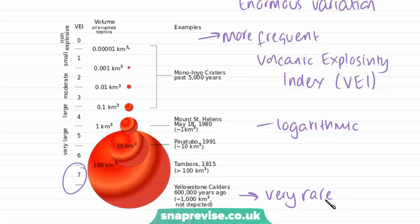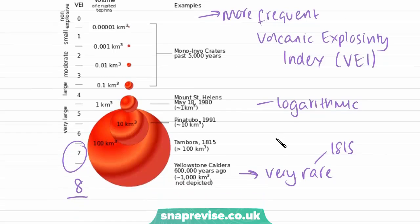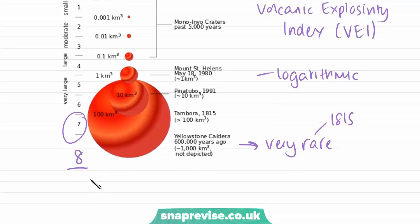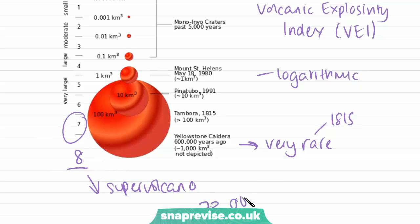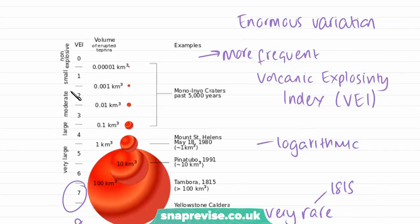It is thought the last time a 7 was recorded was in 1815 in Indonesia. There is actually an 8 on the scale, but it's not usually recorded, because these types of volcanic eruptions are even more rare — these are super volcanoes — and the last time an 8 occurred was around 73,000 years ago. As we go up the scale increasing in explosivity, we go down in frequency, meaning these types of eruptions occur less often.